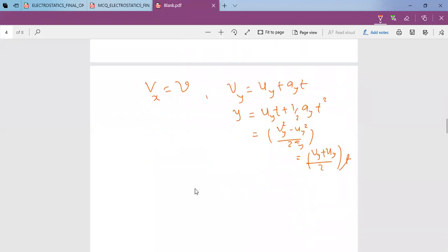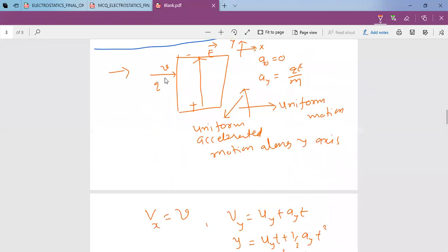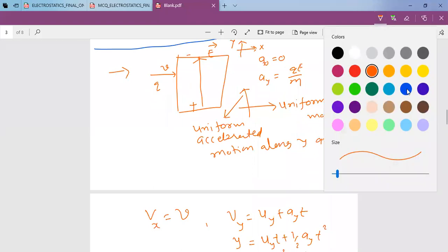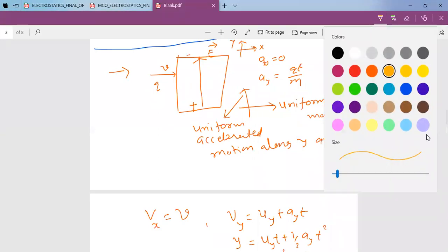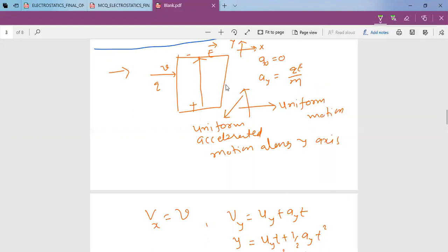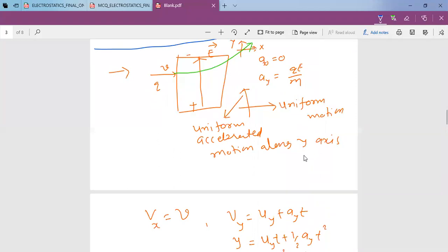The trajectory of particle q will be parabolic. The motion will be like this. Let us go for one more concept.